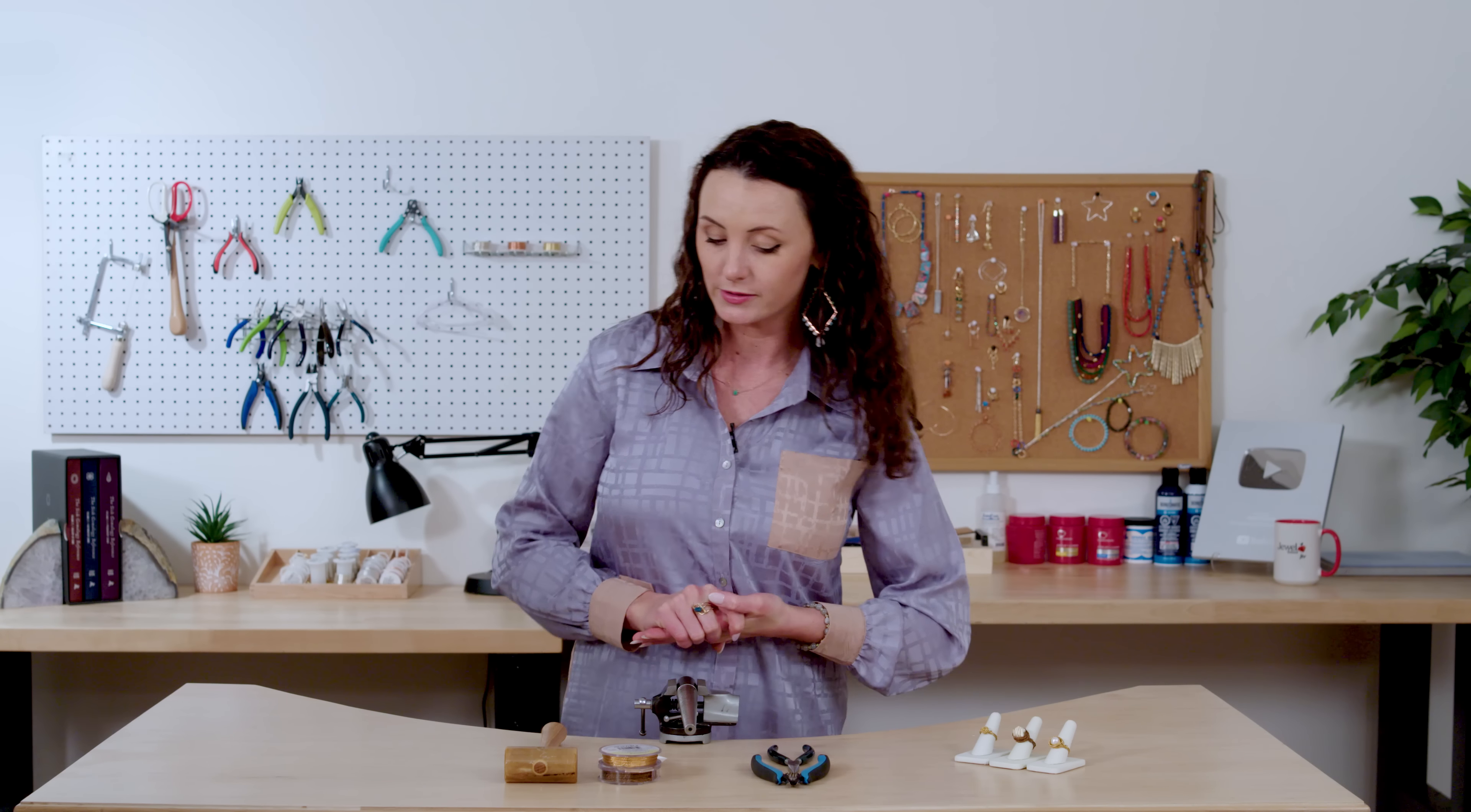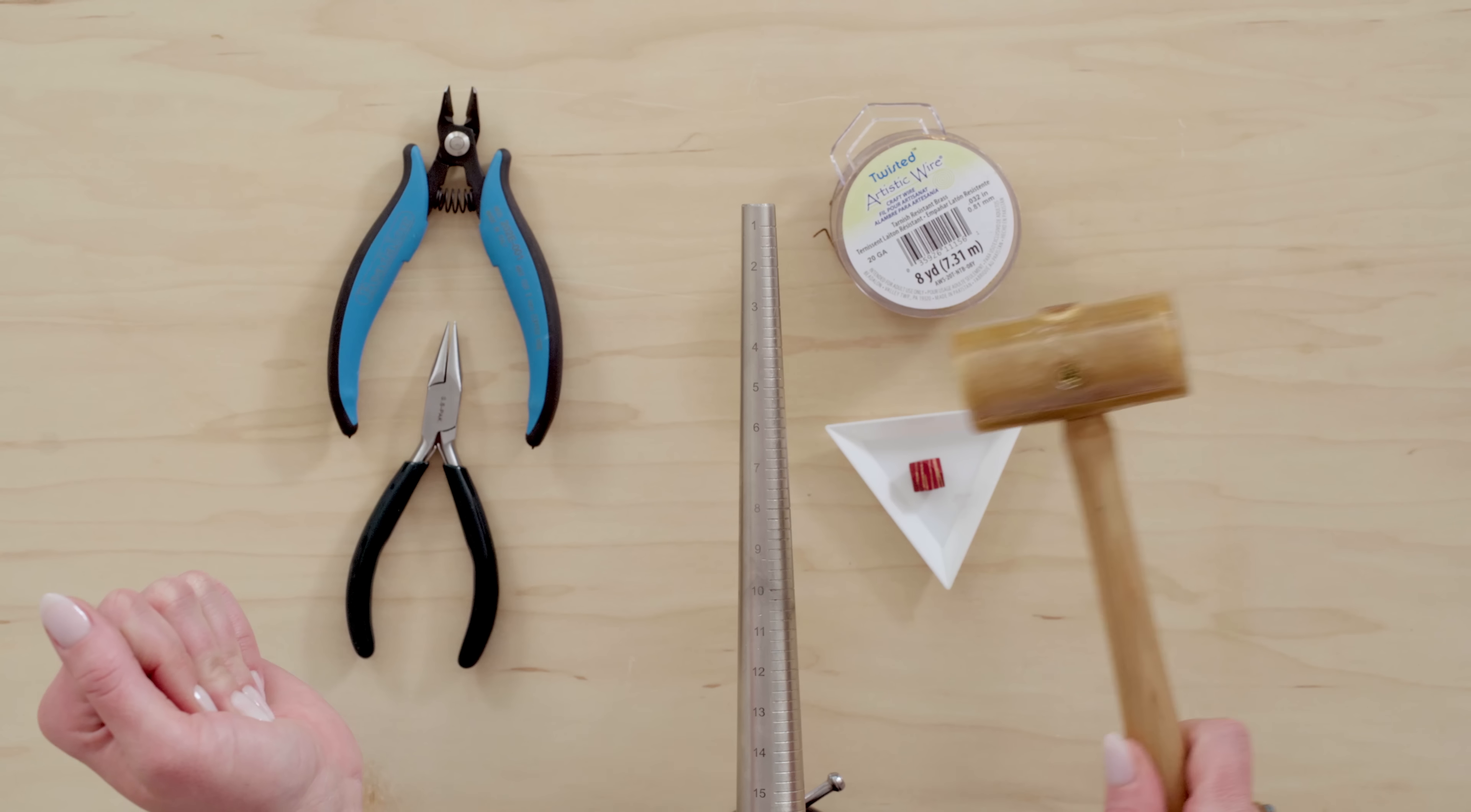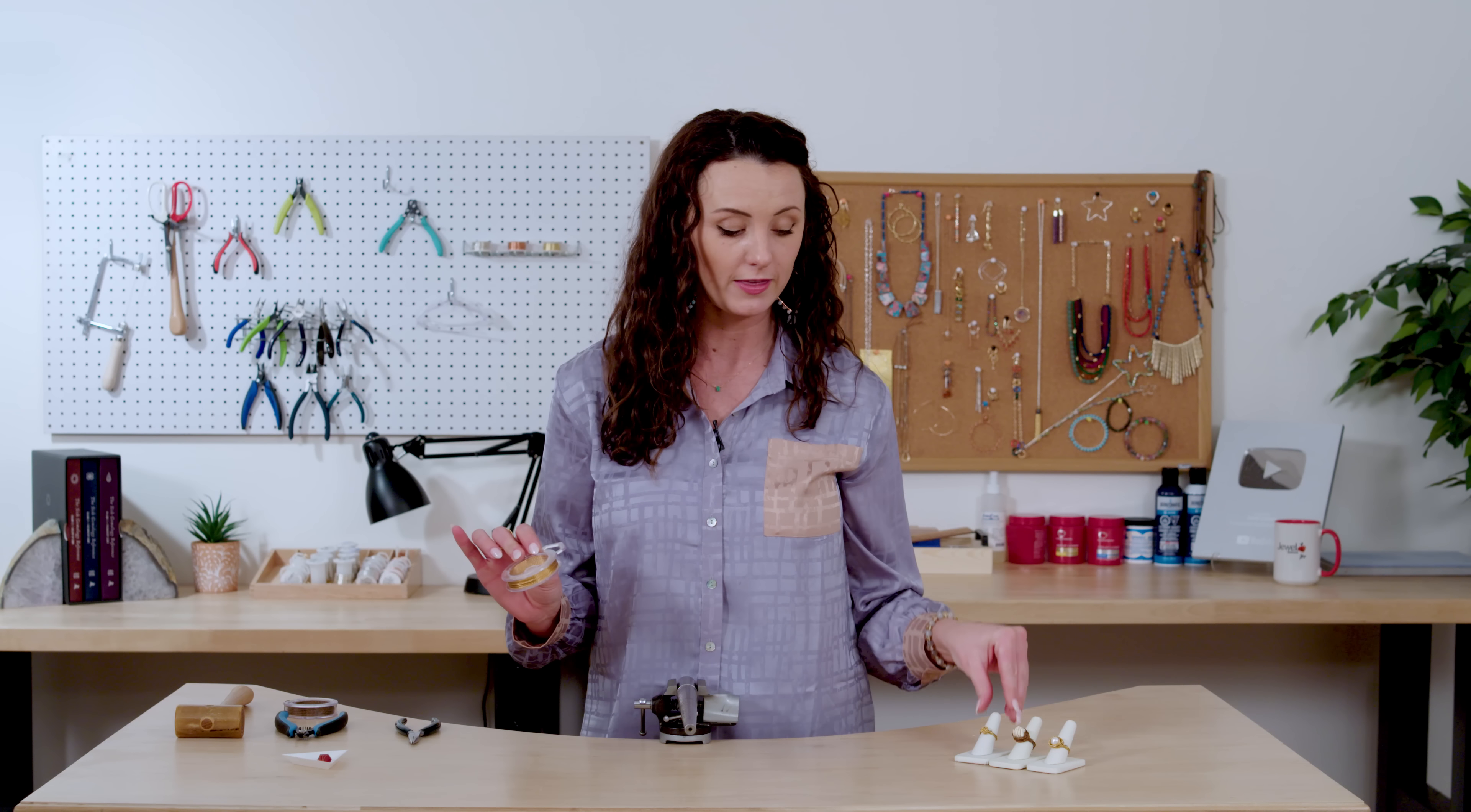All right so here are the tools and supplies we're going to use today. We're going to use our ring mandrel, our flush cutter, and a chain nose plier. We've got two tones of the 20 gauge twisted wire, a wood bead, and my rawhide mallet just in case I need to size the ring after I'm finished.